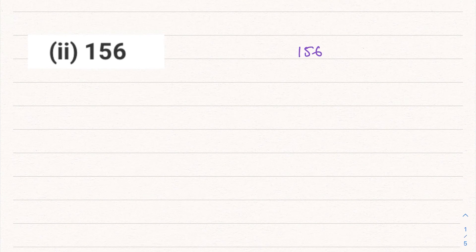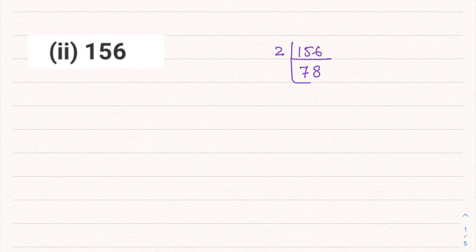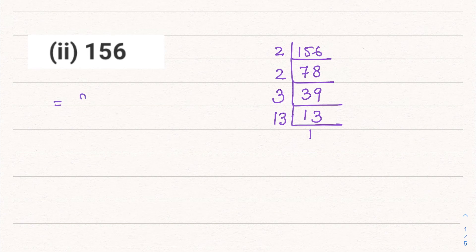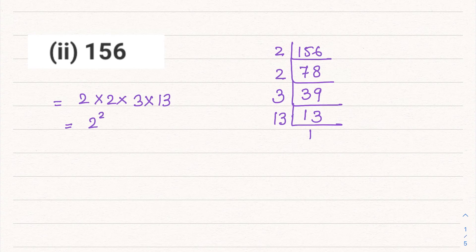Second part is 156. Using the 2 times table: 2 × 78, 2 × 39. Now it comes in the table of 3: 3 × 13. And 13 is a prime number. So its factors are 2 × 2 × 3 × 13, which we can write as 2² × 3 × 13.